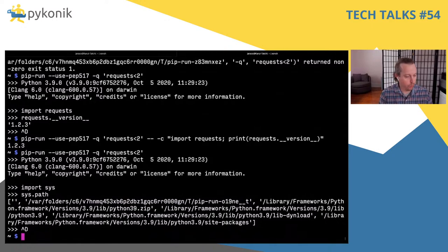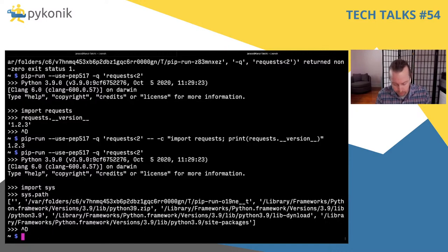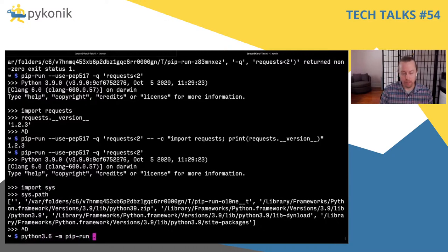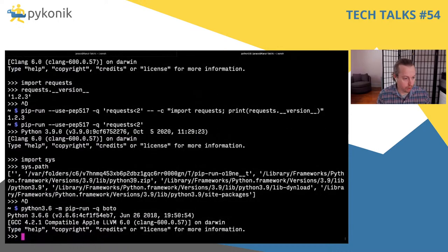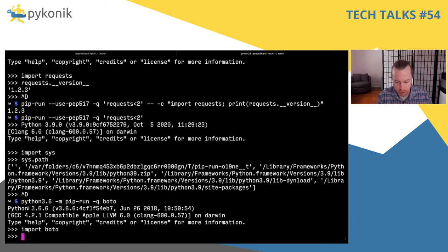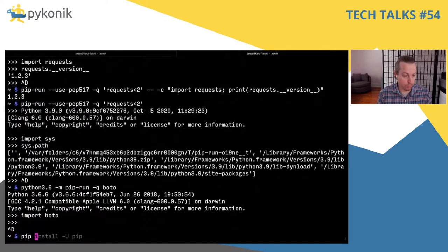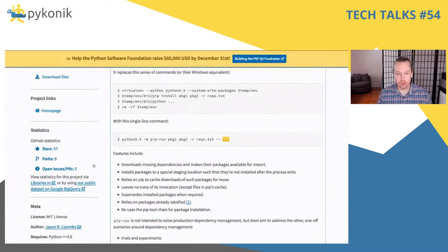pip run is great for debugging — I've used it while debugging jsonpickle, pickling something in one version and piping that to pip run on a different version. You can also do it for cross-Python versions — say I have Python 3.6 and want boto installed, I can just do that with `-q` and get a Python 3.6 shell with boto installed. I'm still working on getting pip run integrated into pip so you'll just have `pip run` everywhere — it doesn't exist yet but it's something I'm working on.